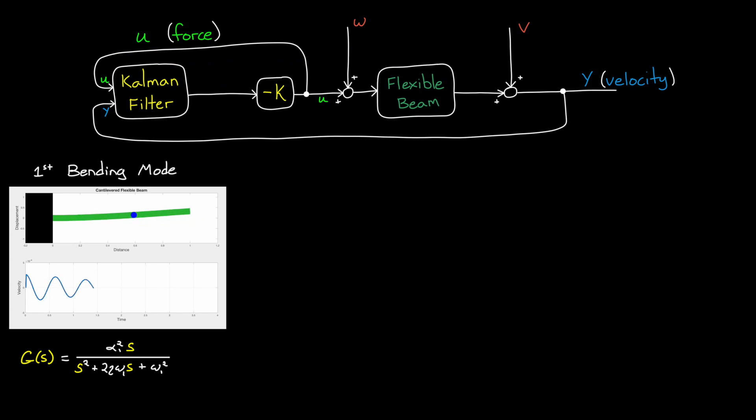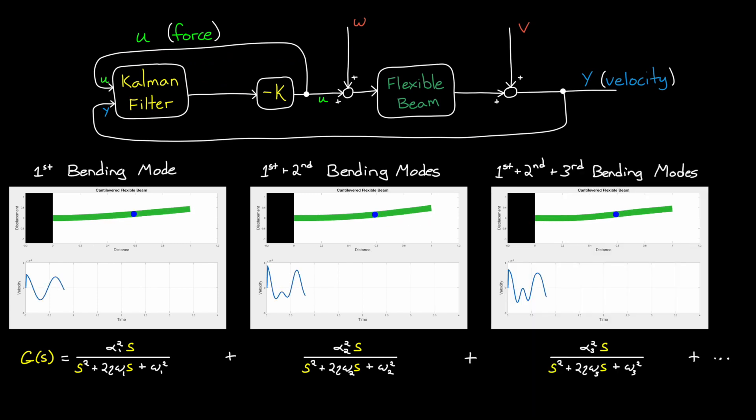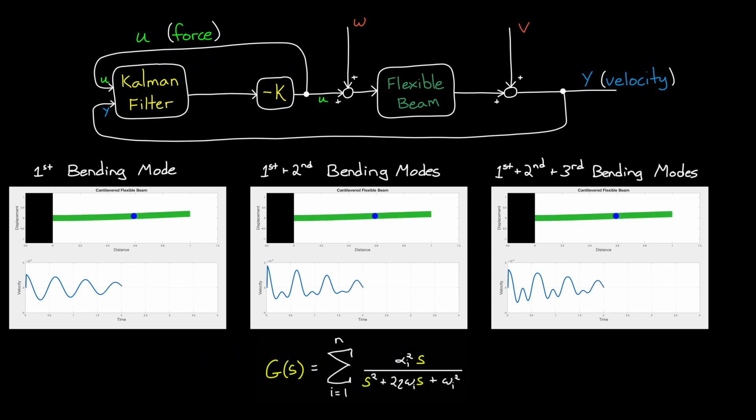We can model the first bending mode of this beam as a second order transfer function with parameters specifying the mode frequency, damping, and gain. We can add to this transfer function the second bending mode to get the response to the first two modes. In this way, we can continue adding more modes in a similar fashion such that the transfer function is this summation.